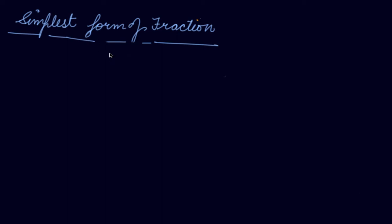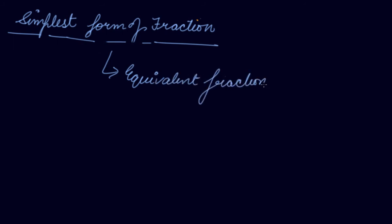Simplest form of fraction. We have learnt about the equivalent fraction, which means that one fraction is equal to another. For example, 2 by 9 is equal to 4 by 18, is equal to 6 by 27, is equal to 8 by 36.